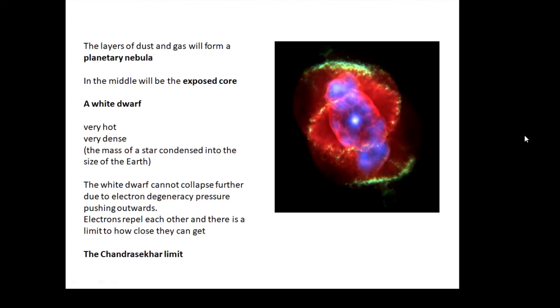A white dwarf is very hot, very, very dense. It's like the mass of a star condensed into the size of the Earth. It's incredibly dense. The white dwarf can't collapse any further, and this is due to something called electron degeneracy pressure pushing outwards.